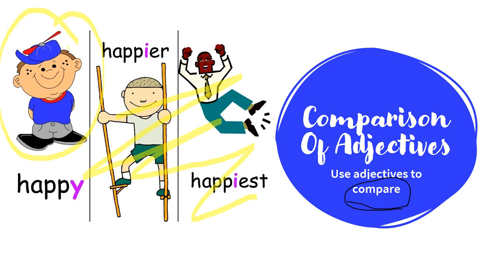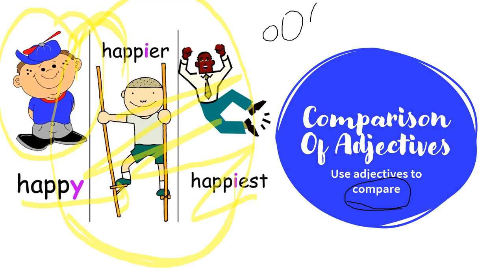But if I am looking at both of them — only two of them are on my screen — I will compare him with this person and say happier. But if I compare all three of them, my way of describing them would differ. So we need to understand first: why do we need comparison of adjectives, or why do we need different words?